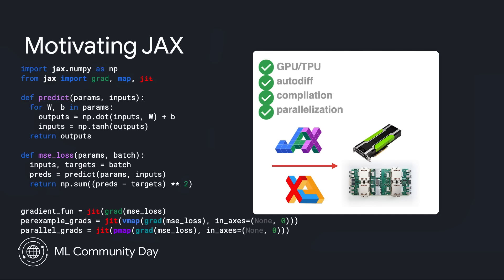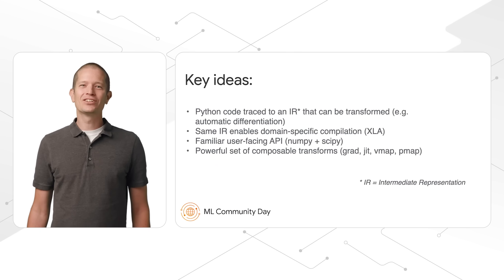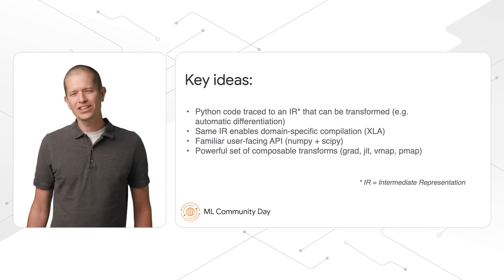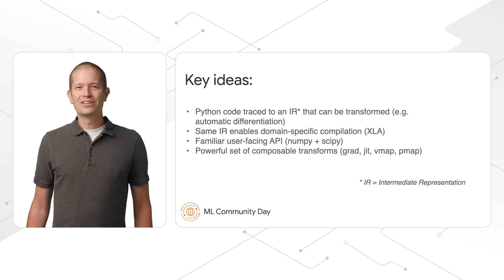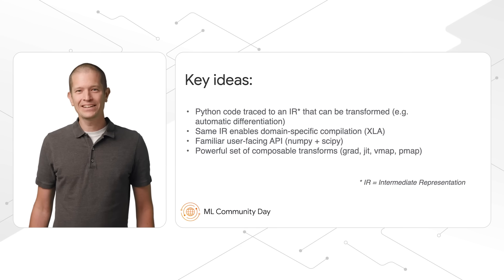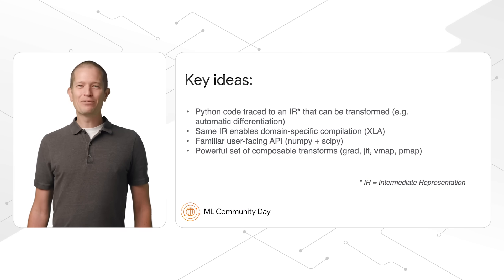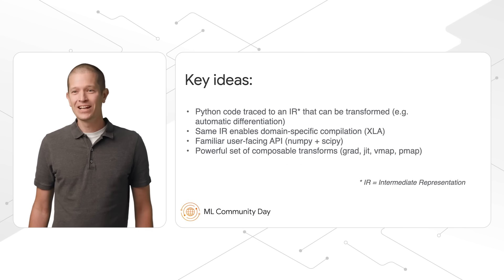The key ideas in JAX are that Python code is traced to an intermediate representation, and JAX knows how to transform this intermediate representation. The same intermediate representation enables domain-specific compilation via XLA so you can target different backends. It has a familiar user-facing API based on NumPy and SciPy, and on top of that, a powerful set of transforms — grad, jit, vmap, pmap, and others — that let you do things with your code that you weren't able to do before.